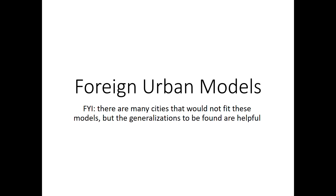Hi everybody. Last class we learned about common U.S. urban models. Today we're going to look at foreign urban models in three major areas: Latin America, Sub-Saharan Africa, and Southeast Asia. There are patterns for some other places in the world. For example, European cities and Middle Eastern cities tend to have a really old urban core, often surrounded by a wall or lots of walls. This is because the cities are so old that one of the more common ways of defending cities back in the day was to just build a wall around it.